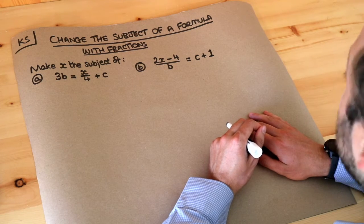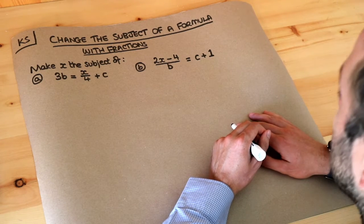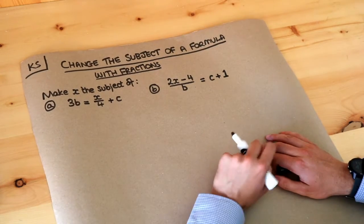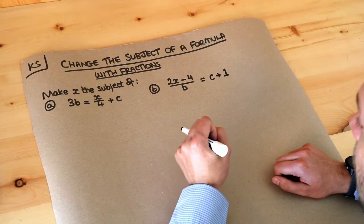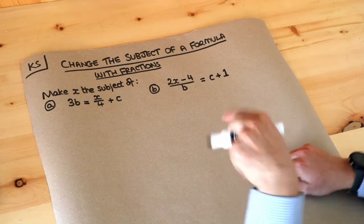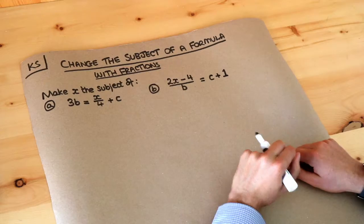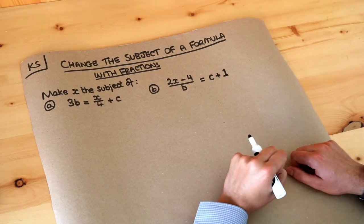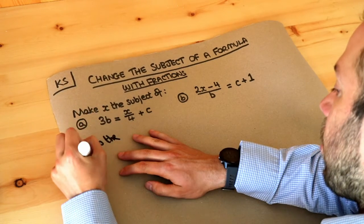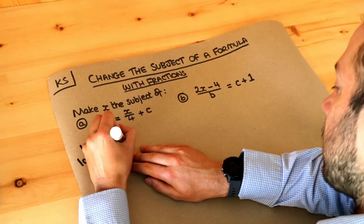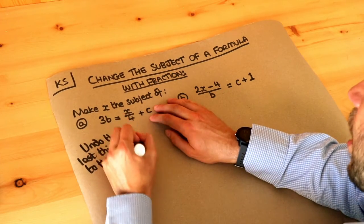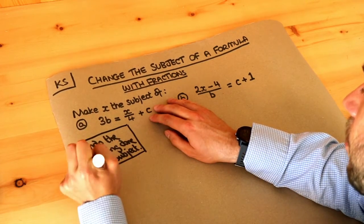Hello and welcome to this Dr Frost Maths key skill video on changing the subject of a formula involving fractions. So we want to make x the subject of each of these equations. Remember, to make x the subject means to get x on its own on one side of the equation, so it should be x equals and then some expression. Our general strategy is to undo the last thing done to the subject. We think about the story of what's happened to x and then undo that chronologically.